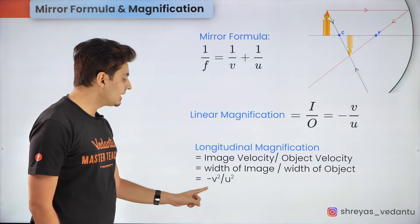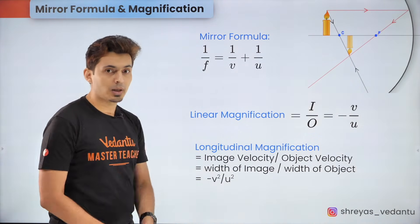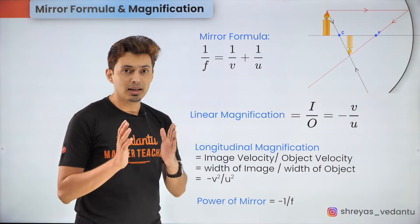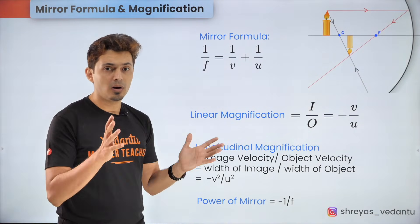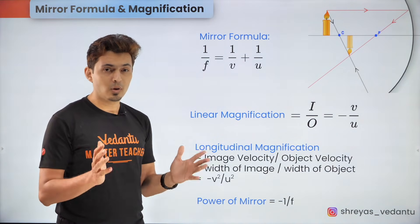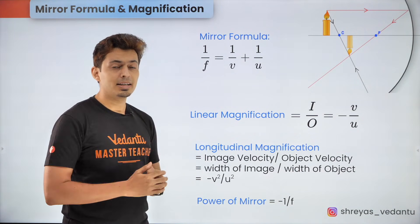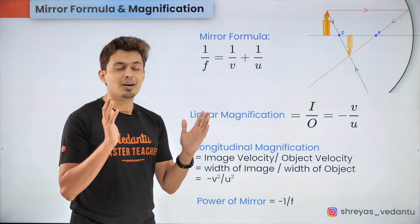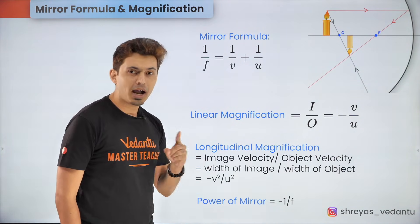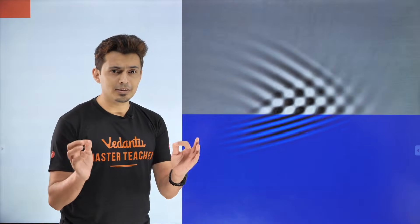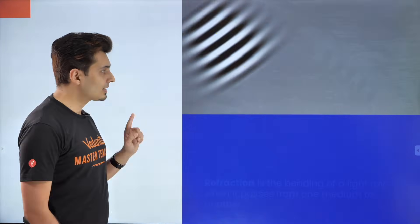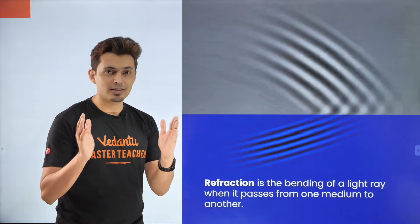The power formula of the mirror tells you the degree of convergence or divergence produced by an optical instrument. If the power is positive, the optical device is converging; if negative, it is a diverging device. The formula for a mirror's power is negative 1/f. When light changes medium, it also changes its speed and bends — this phenomenon is called refraction.